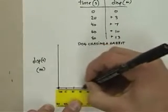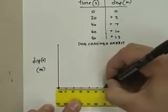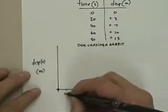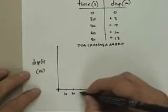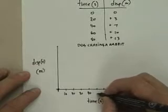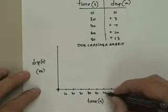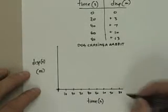10, 20, 30, 40, 50, 60, 70, 80. Write those in. 10, 20, 30, 40, 50, 60, 70, and 80.